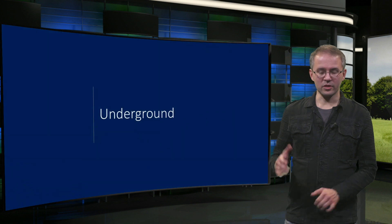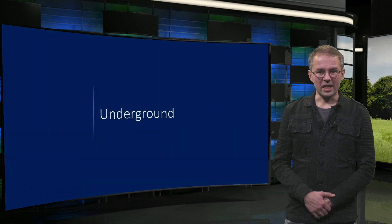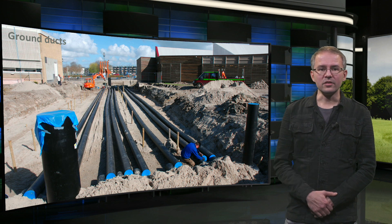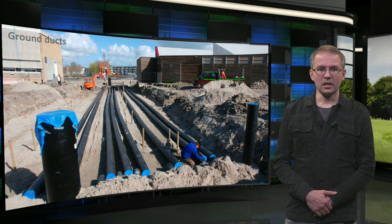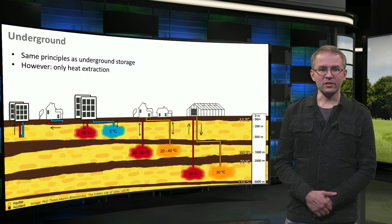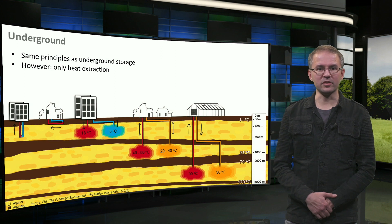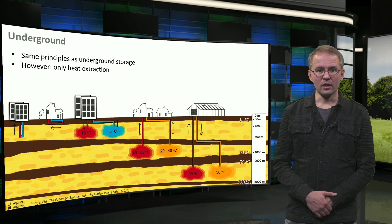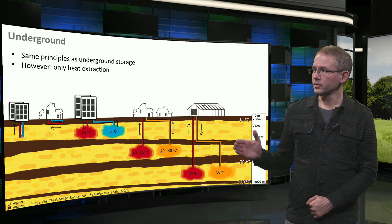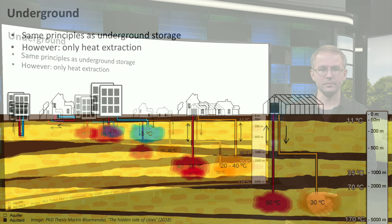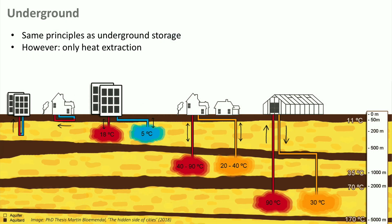The last source is below us — the underground. In Erik's lecture you saw ground duct ventilation, a simple example of using the soil for preconditioning ventilation air. There are however other systems that can use the underground. Although volcanic regions like Iceland are famous for using their volcanic heat, it can and is being used in many other places in the world if the ground is suitable. For buildings, shallow and deep geothermal heat are used. These systems are very similar technically to some of the storage systems from Sabine's lecture, except they only draw energy from the underground.